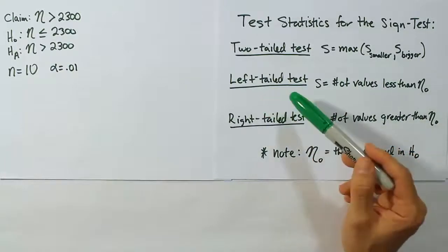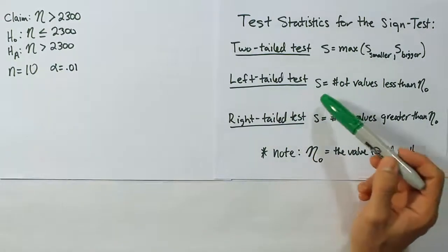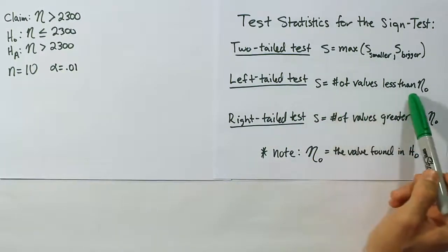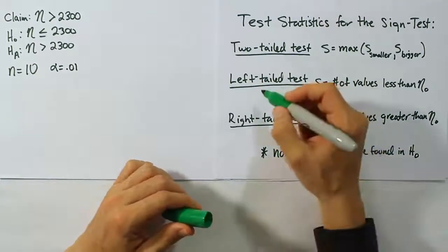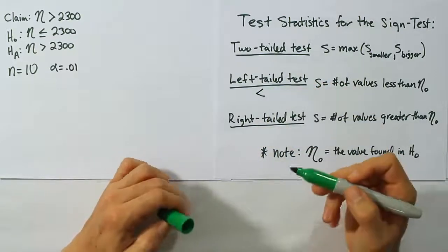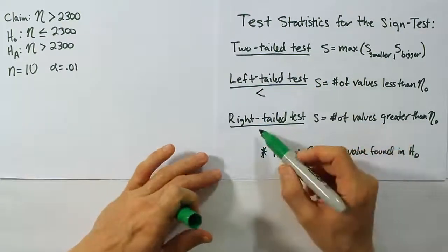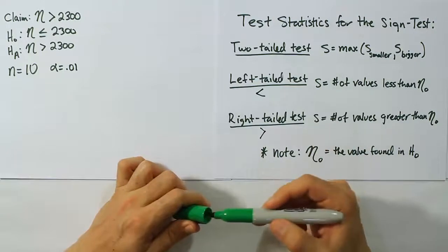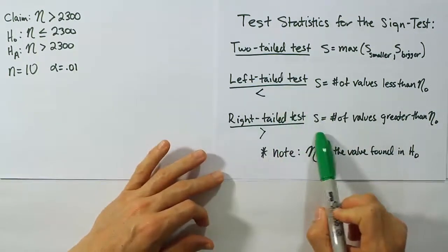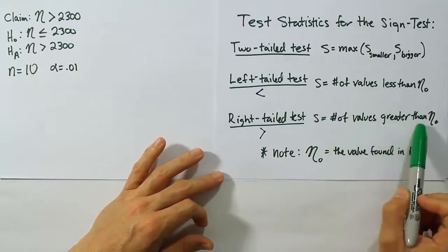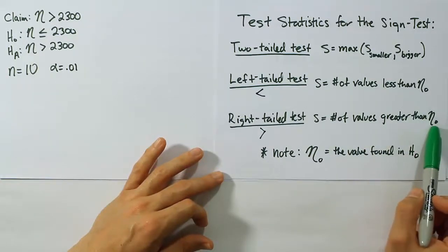Now for the left-tailed test, we have S equals the number of values less than this value, which makes sense because when we think of left-tailed, don't we think of a less than symbol? I think we do. And when you think of right-tailed, you tend to think of a right-tailed symbol. So that's pretty much routine. And for the right-tailed test, S is going to be the number of values greater than η naught or eta naught.